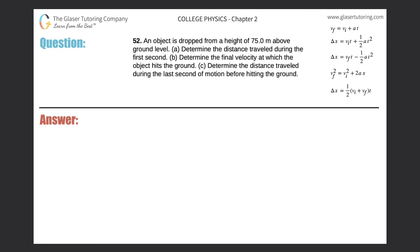Number 52. An object is dropped from a height of 75 meters above ground level. Determine the distance traveled during the first second. So we have an object, and it's dropped from a height of 75.0 meters. Since it's just dropped, there is no initial velocity imparted on it, so its initial velocity is equal to zero meters per second.